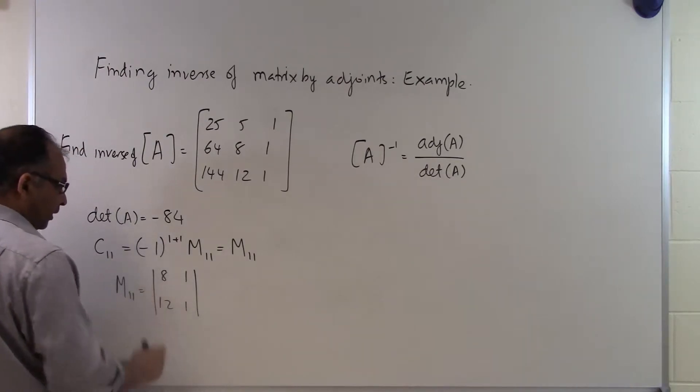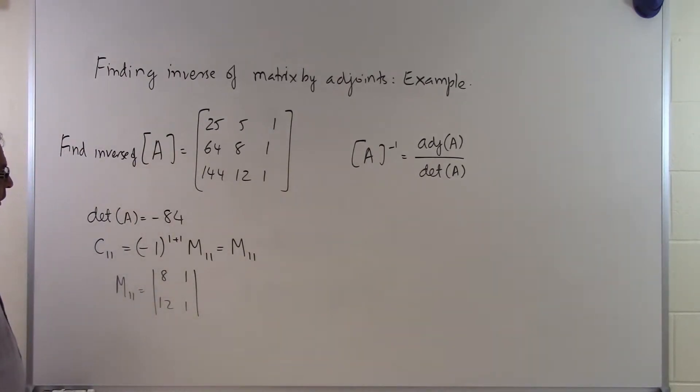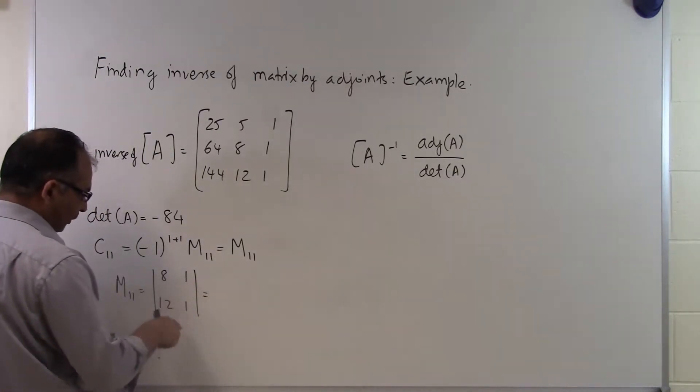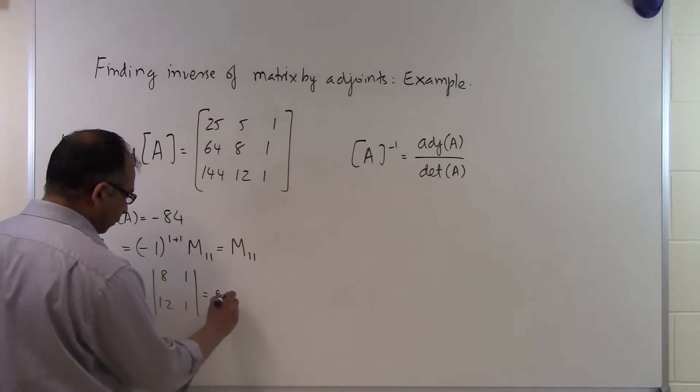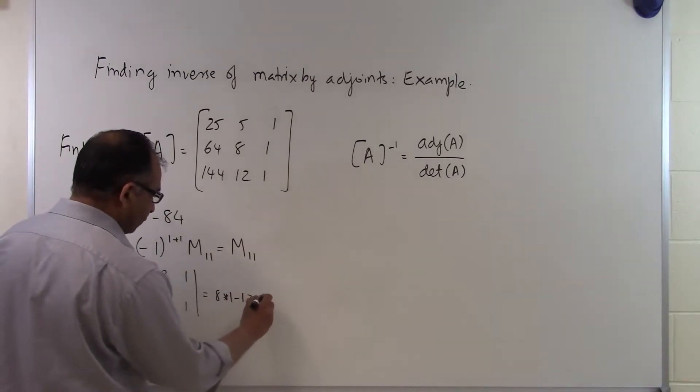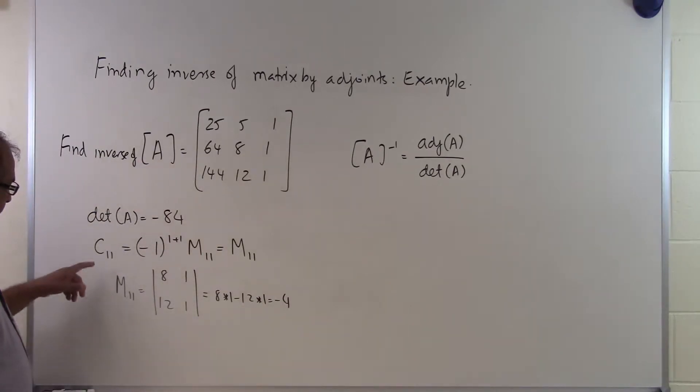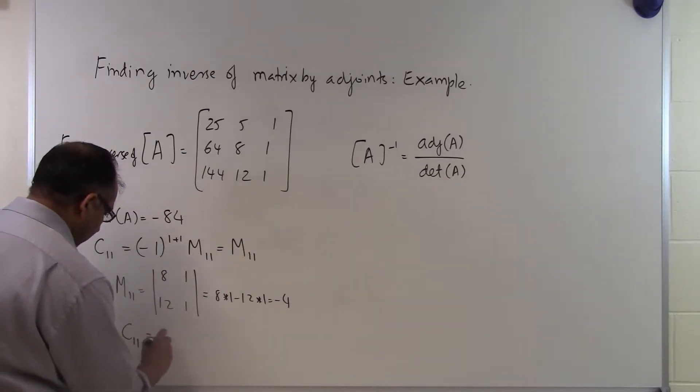I find the determinant of whatever I'm left with. So I'm left with a submatrix of 2 by 2: 8, 1, 12, 1. Finding the determinant of a 2 by 2 is pretty simple. This is 8 times 1 minus 12 times 1, and that gives you minus 4. So C11 is equal to M11 and M11 is minus 4. This gives me C11 is just minus 4.